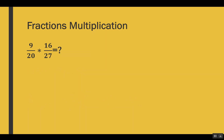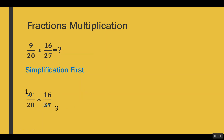Let's see another example. I have taken 2 fractions: 9 out of 20 and 16 out of 27. We have to multiply these fractions. Using simplification first, we can simplify because 9 and 27 have the common factor 9 itself.